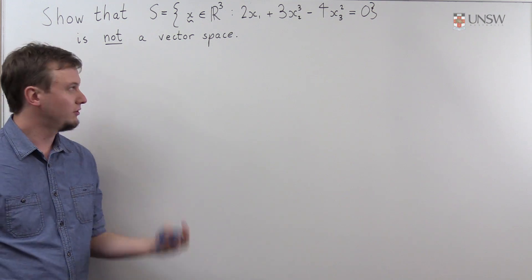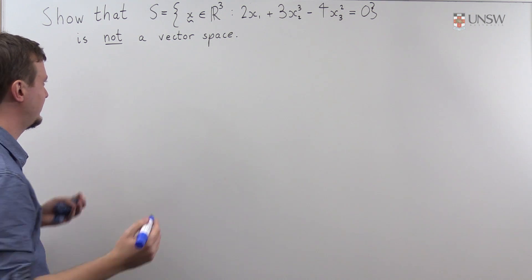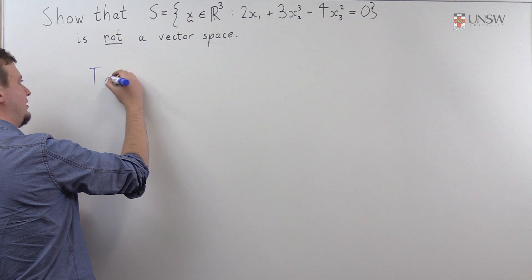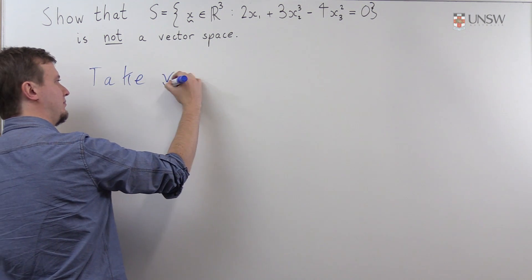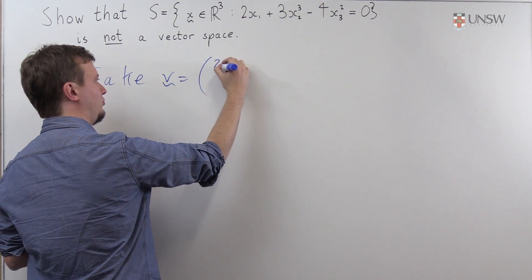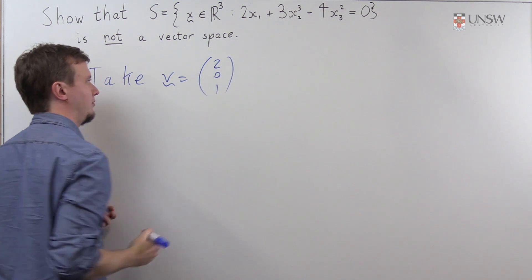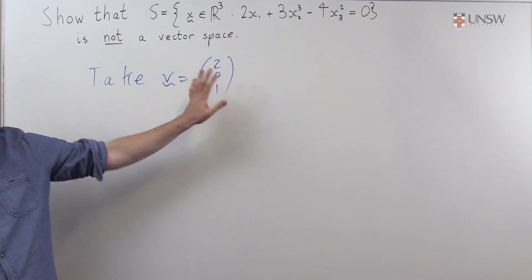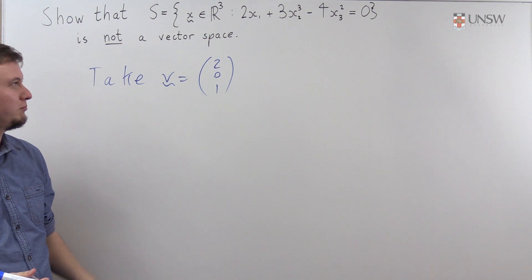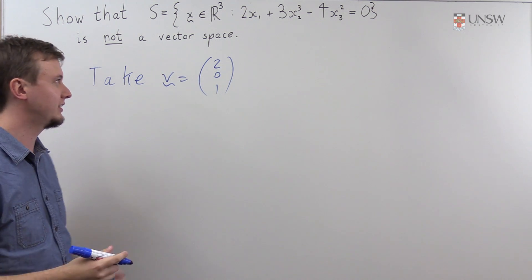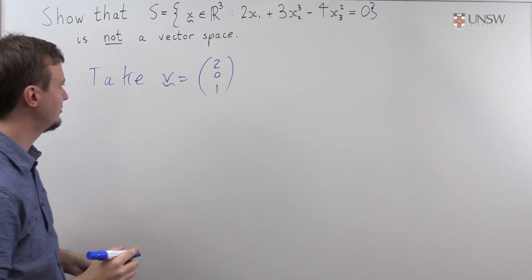Okay, so the vector we're going to take is the vector 2, 0, 1. Now I claim that this is actually in the set S, but you shouldn't just take my word for it. You should check that this actually does belong to S.